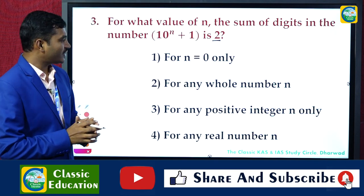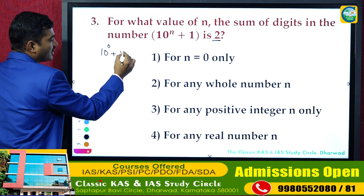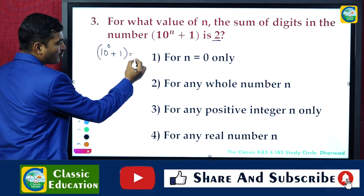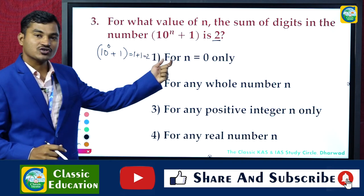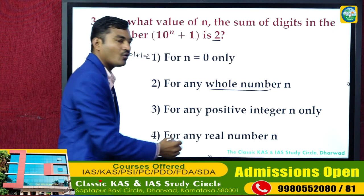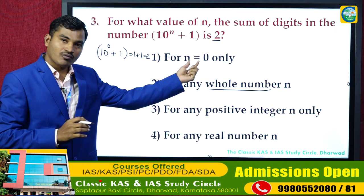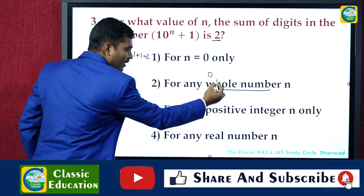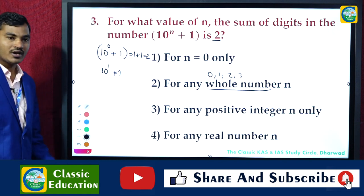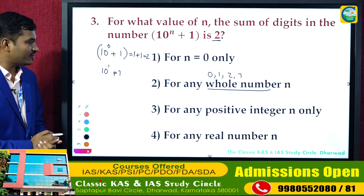For n = 0: 10^0 = 1, so 1 + 1 = 2, digit sum = 2. This satisfies the condition. For n = 1: 10^1 = 10, so 10 + 1 = 11, digit sum = 1 + 1 = 2. Also satisfied. For any whole number n, 10^n gives values like 10, 100, 1000, 10000 — all of which have digit sum 1. So 10^n + 1 always gives digit sum 2 for any whole number n.